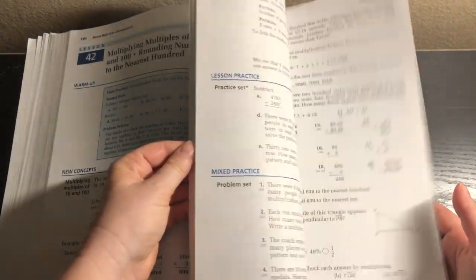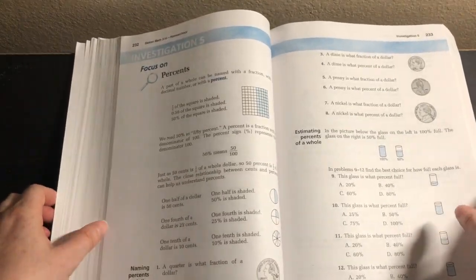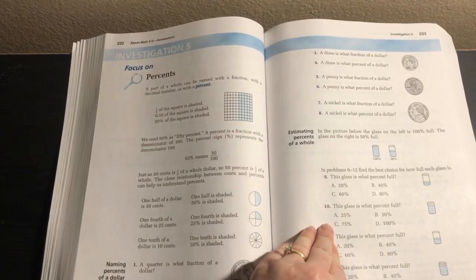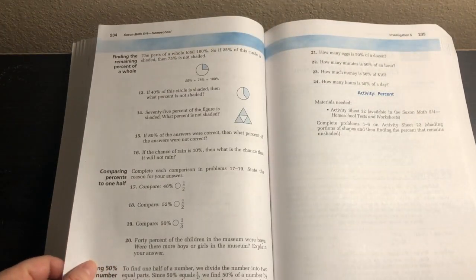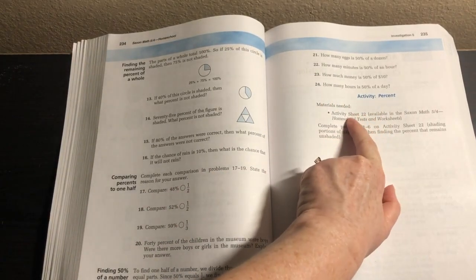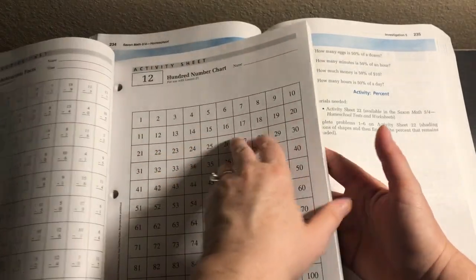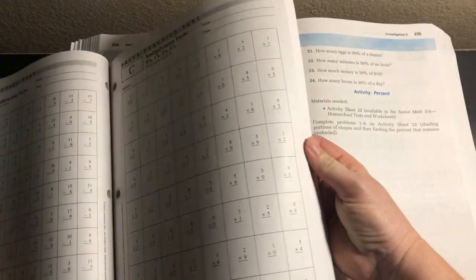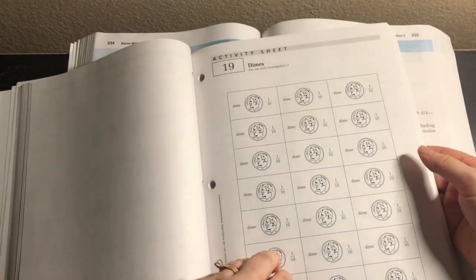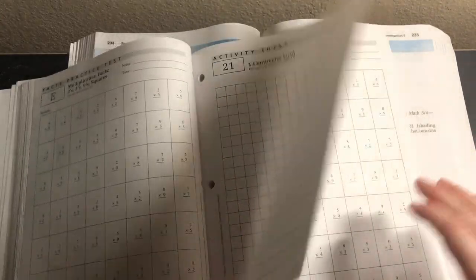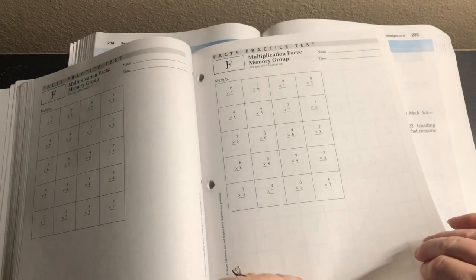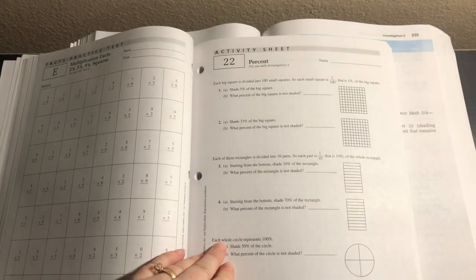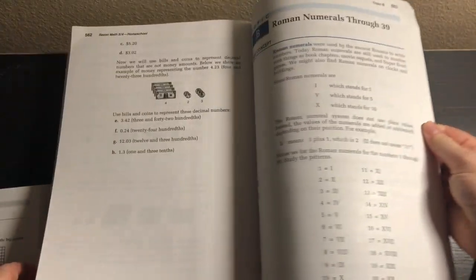Let me show you an investigation. Here's an investigation, this is a focus on percents. In this they're going to need an activity sheet 22. That's in here. So we're going to say activity sheet 22, so we're going to keep going. Activity sheet 22. That is what it looks like. I'm not going to flip through the whole thing but you get the idea.